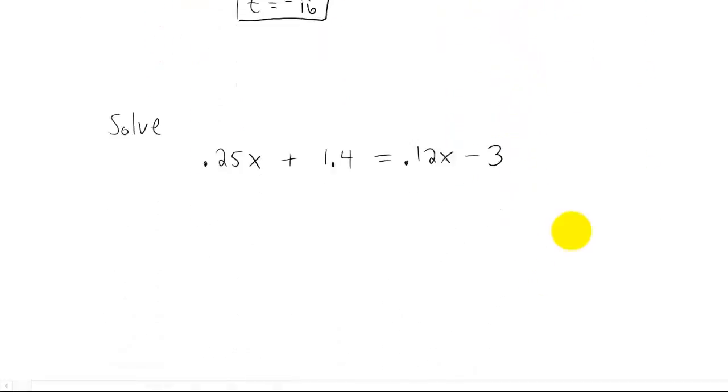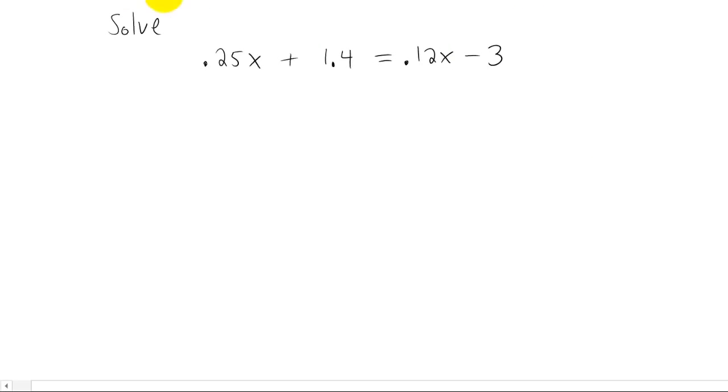Let's take a look at a linear equation that has decimals. Again, if this problem had parentheses, you'd want to multiply through to get rid of the parentheses. But now we're looking at this and we see decimals and we don't necessarily want to have to deal with decimals. You certainly could if you wanted to, but it's going to be easier if we can clear the decimals in a way that's similar to clearing the fractions from the last problem.